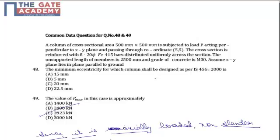Students, question number 49 is the second part of a common data series of questions 48 and 49, which asks for the value of P max in this case. Those who have appeared for all tests may have seen this type of question in test series 2 or 3, but there the load was acting only in the x direction, that is, acting at coordinates 15, 0.